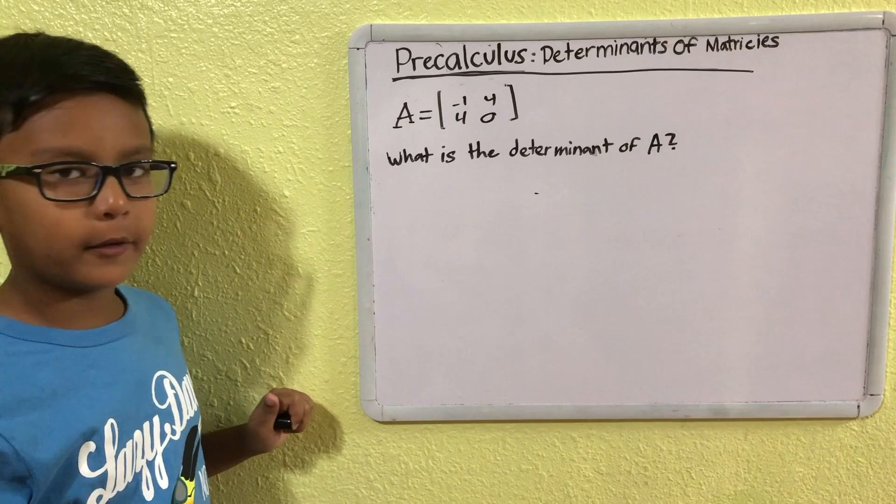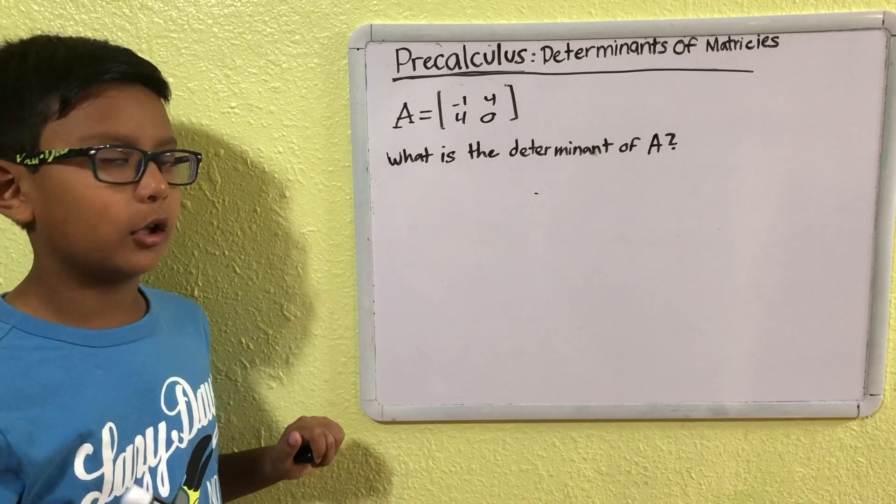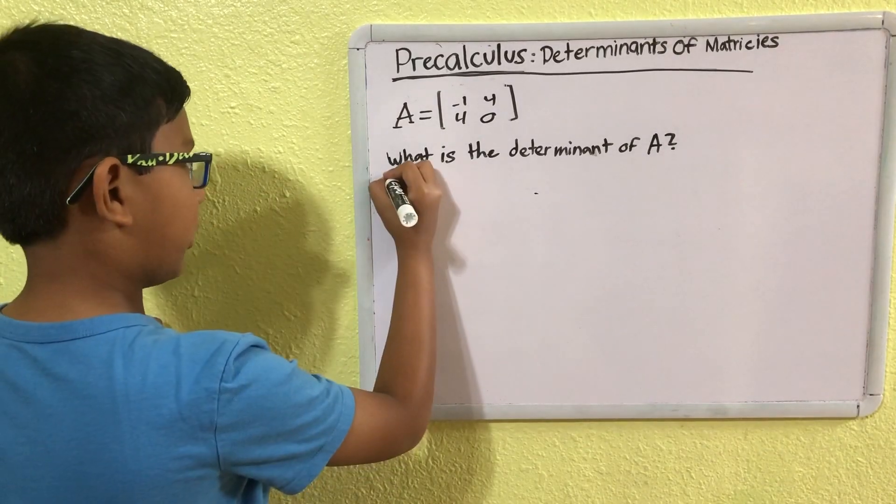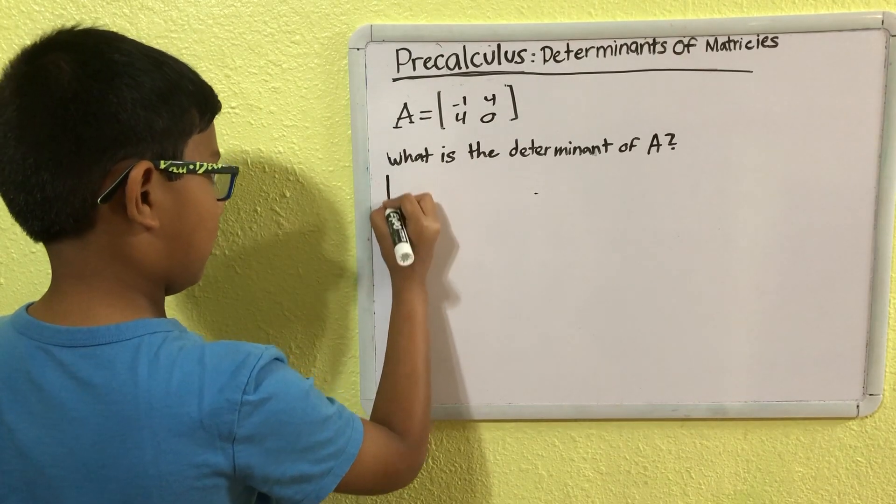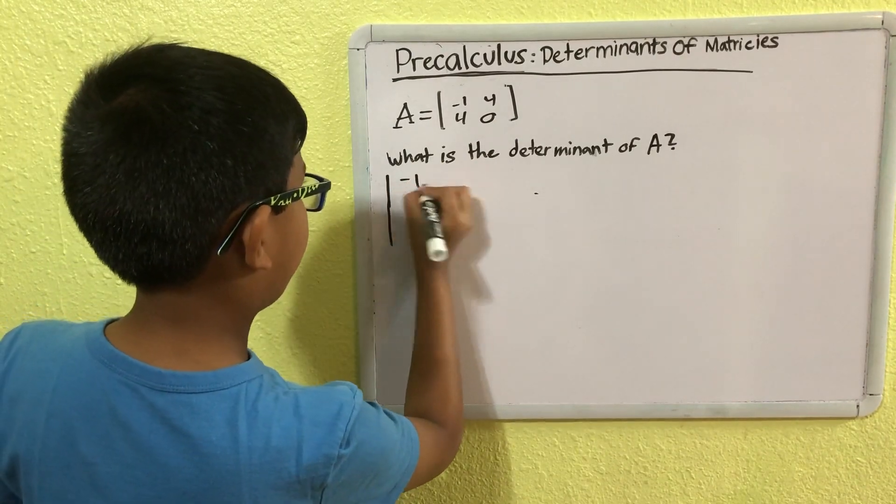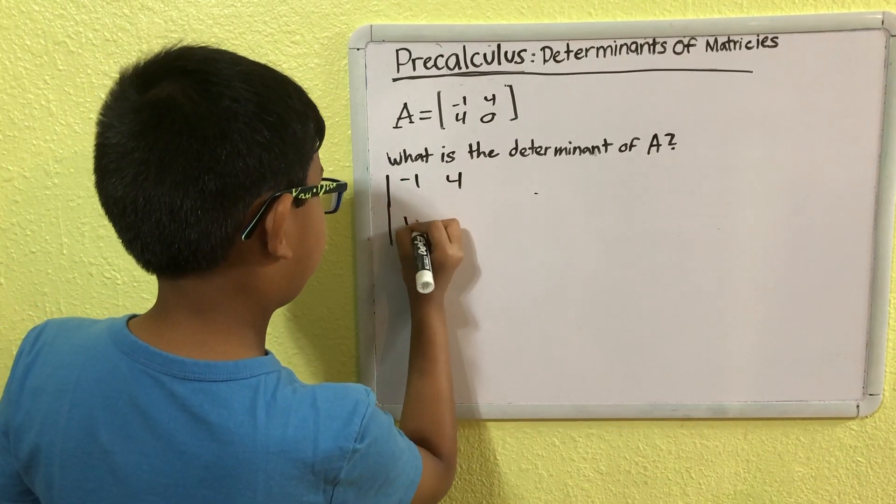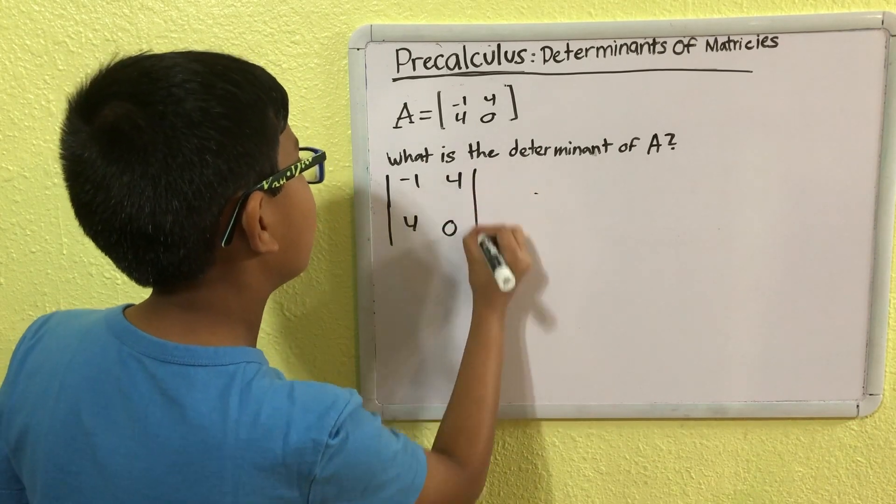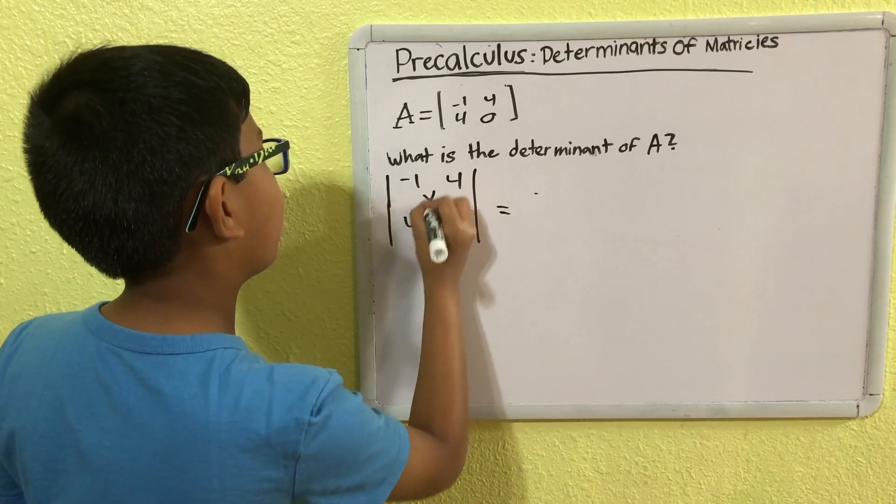So, now that we know how to solve for the determinants, let's take a look at it. So, we just rewrite it. Minus 1, 4, 4, 0.